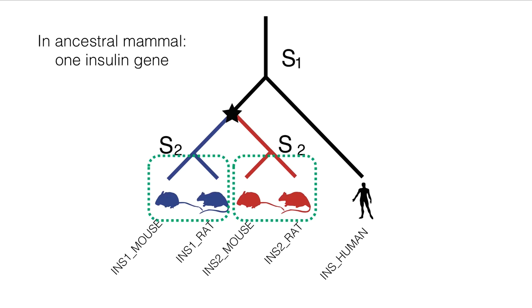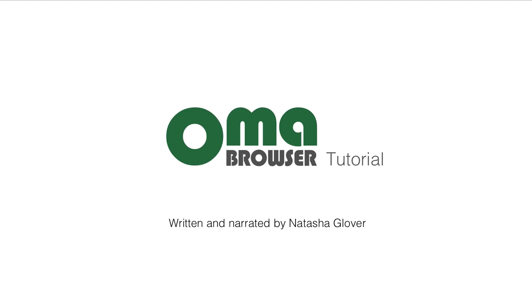It's therefore quite natural that there should be two HOGs at that level. Now that we know what HOGs are, in the next part of this series, we will discuss how to explore HOGs with the OMA browser.